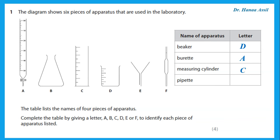Which one is the measuring cylinder? Of course, the measuring cylinder is C. We use it to measure volumes, but it is not very accurate. So we use it when we are told to add about 20, about 15 centimeter cubed, and so on. Which one is the pipette? Remember, the pipette is F.